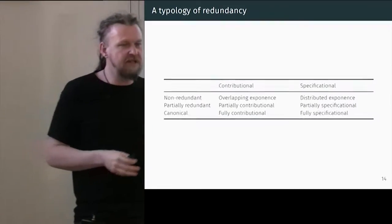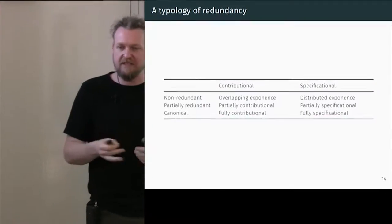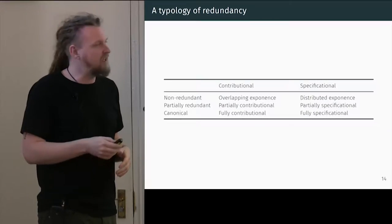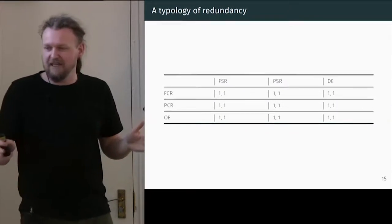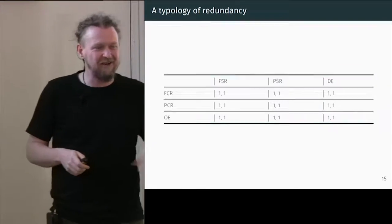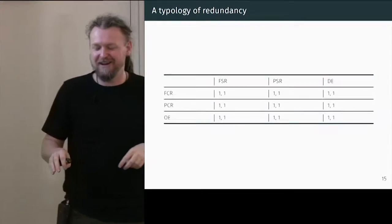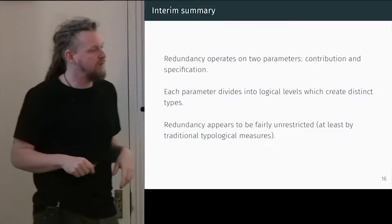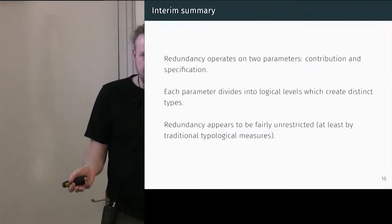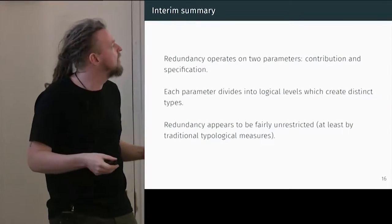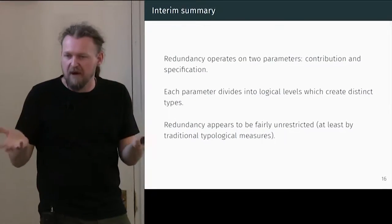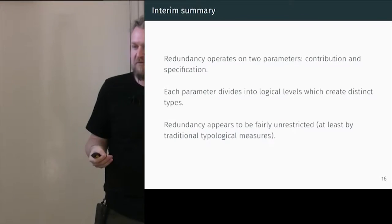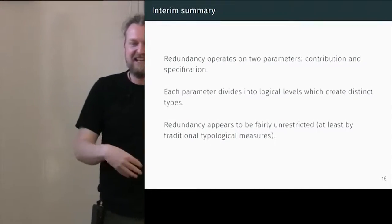This gives us a beautiful typological space of possibilities — a different way of classifying examples according to the way the world works. I've treated these as independent variables, but they intersect and cross-cut, and I've got examples of every possible combination. You can have specificational redundancy interacting with contributional redundancy, and it seems fairly unrestricted. A quick interim summary: all you need to remember is that there are two types of being redundant — one in terms of contribution, one in terms of specification. Each of these parameters divides into three logical levels with parallels across them, and it seems completely unrestricted.